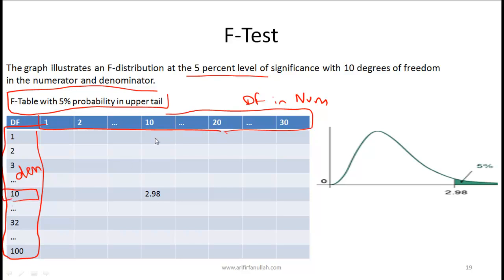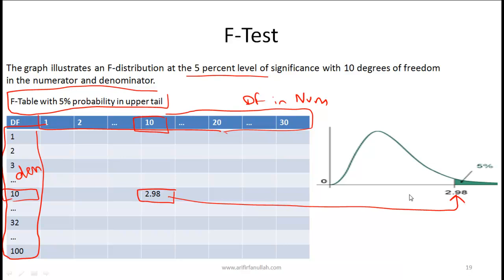For example, with 10 degrees of freedom in both numerator and denominator, the critical value is 2.98. If your calculated F-statistic falls to the right of this critical value, you reject the null hypothesis that the variances are equal; if it falls to the left, you fail to reject the null hypothesis.